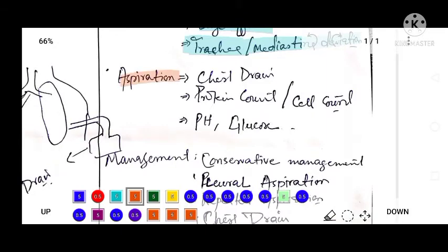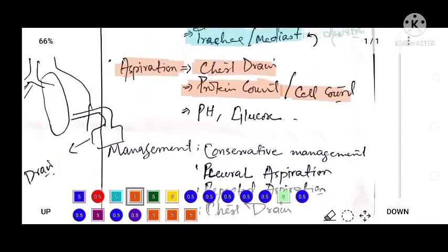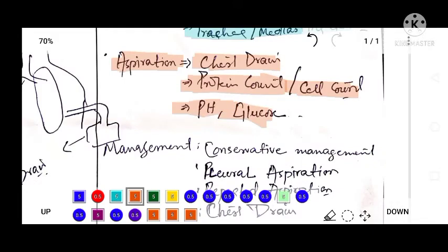Another laboratory investigation will be aspiration. Chest drainage will be performed and from that aspiration we can look at the protein count, cell count, pH of the fluid, and glucose of the fluid.